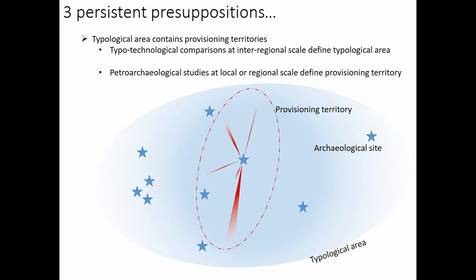The third presupposition is about the typological area and the provisioning territory. Most of the time we think that typo-technological comparisons at interregional scale define the typological area. If we spot on a map all sites with this techno-complex, we have this typo-technological area, and the assumption is that each site's provisioning territory is contained within the larger typological area.